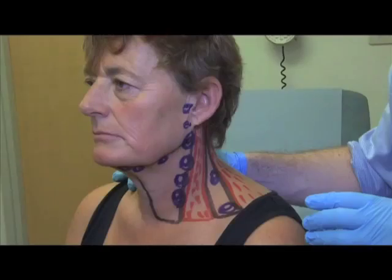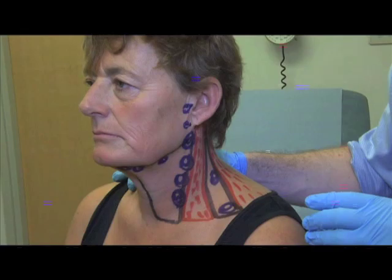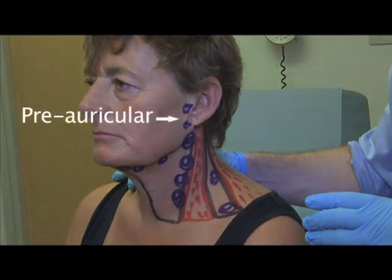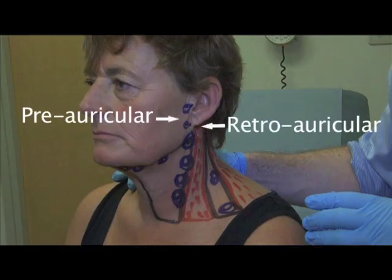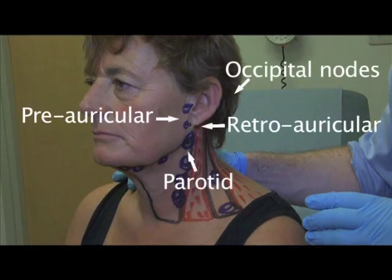The lymphatic anatomy of the neck is complicated. Traditionally the neck is divided into five zones. However, it is important when examining the skin cancer metastasis not to forget the preauricular, retroauricular, parotid and occipital nodes.